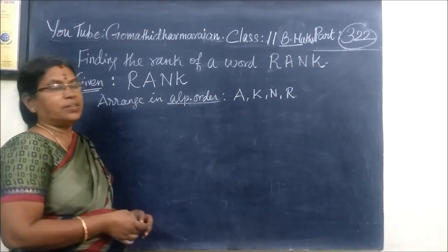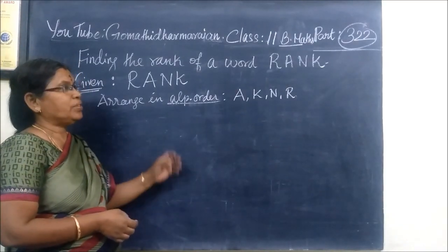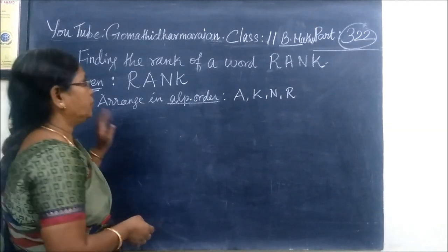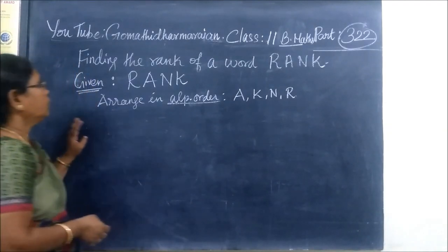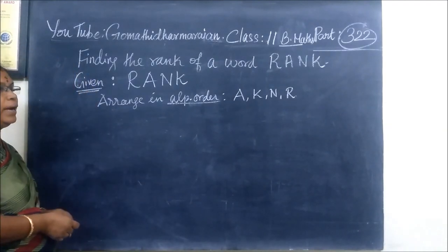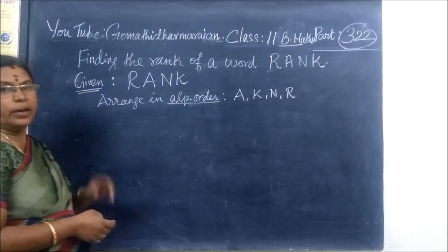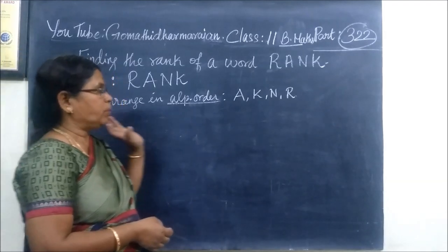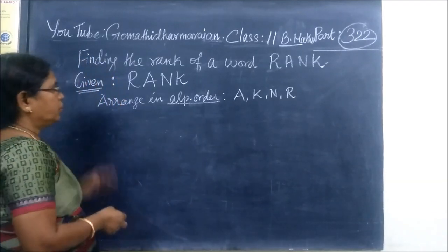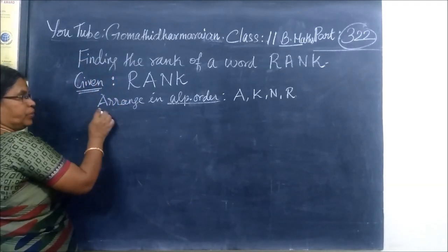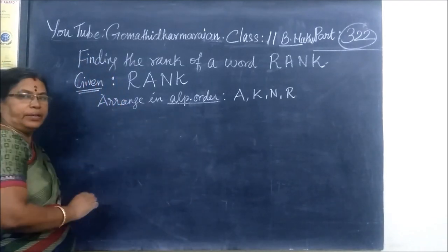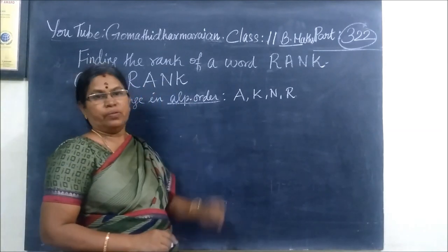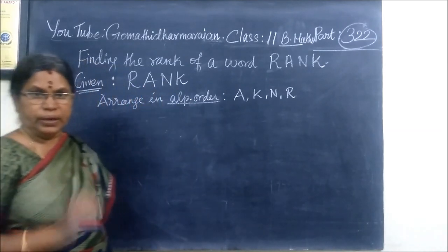Good evening students. We see path number 332, 22 — finding the rank of your word, a rank. This is a student who is now asking them to approve. First, we arrange the alphabetical order. Put the word in the alphabetical order.